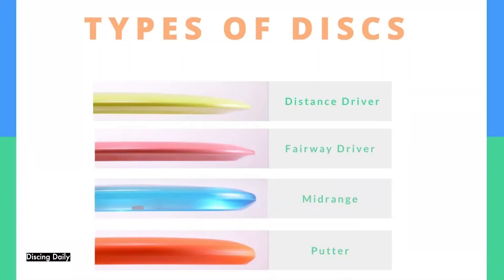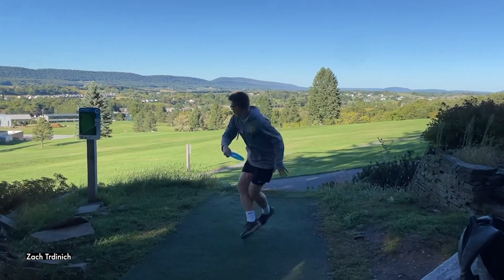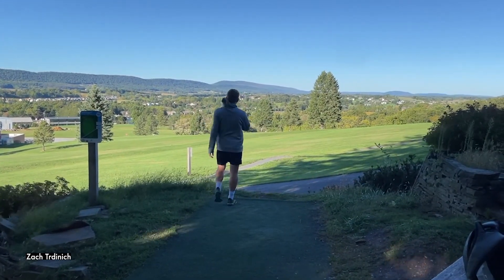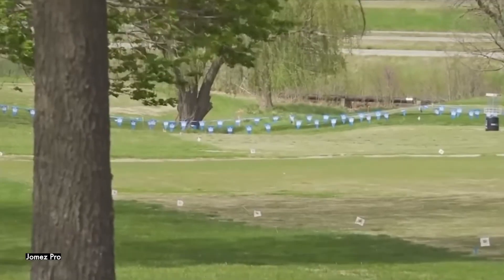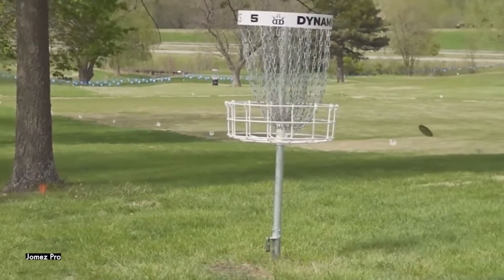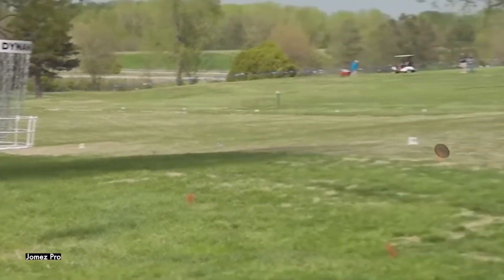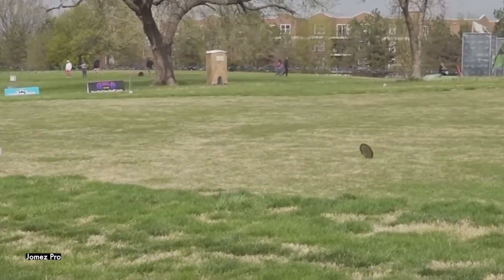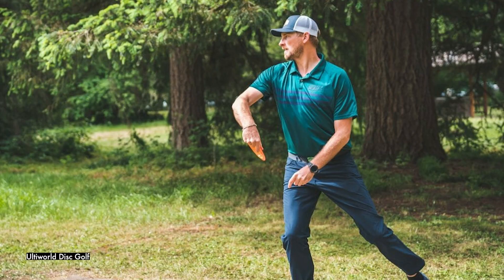There are fairway and distance drivers, mid-range discs, and putters. Different types of discs have different flight paths, and they accomplish different things. Wind greatly affects disc flight. Seasoned players know exactly what disc to use and when, depending on whether there's a tailwind, crosswind, or headwind. Professional disc golf player Jeremy Koling explains the difference between types of discs.